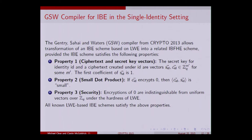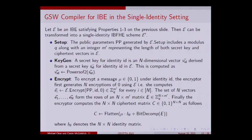The only limitation of the GSW approach — and the motivation for this work — was that it was restricted to single identities: it could only do evaluation on ciphertexts with the same identity. The adaptation from the GSW compiler is quite simple.